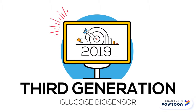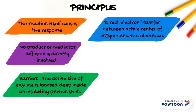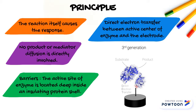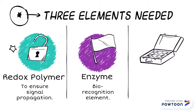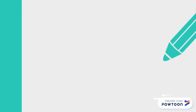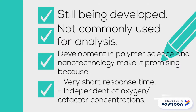Third generation biosensor: the reaction itself causes the response and no product or mediator diffusion is directly involved. It is based on the direct electron transfer between the active center of the enzyme and the electrode. This is difficult because the active site of the enzyme is located deep inside an insulating protein. Generally, the third generation biosensor consists of three elements: the redox polymer, the enzyme, and the electrode. These biosensors are still being developed and are not commonly used. However, developments in polymer science and nanotechnology make third generation biosensors promising, as they are likely to have very short response times and be relatively independent of oxygen or cofactor concentrations.